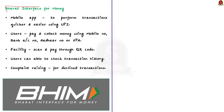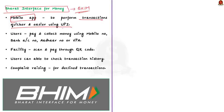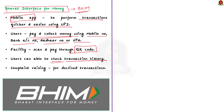Now let us understand about BHIM — Bharat Interface for Money. BHIM is a mobile app that helps us make money transactions quicker and easier using UPI. You can make instant bank-to-bank payments and pay and collect money using mobile number, bank account number, Aadhaar number, or the VPA. Note that BHIM also has the facility to scan and pay through QR codes. Users are also able to check their transaction history and raise complaints for any declined transactions in the app itself.